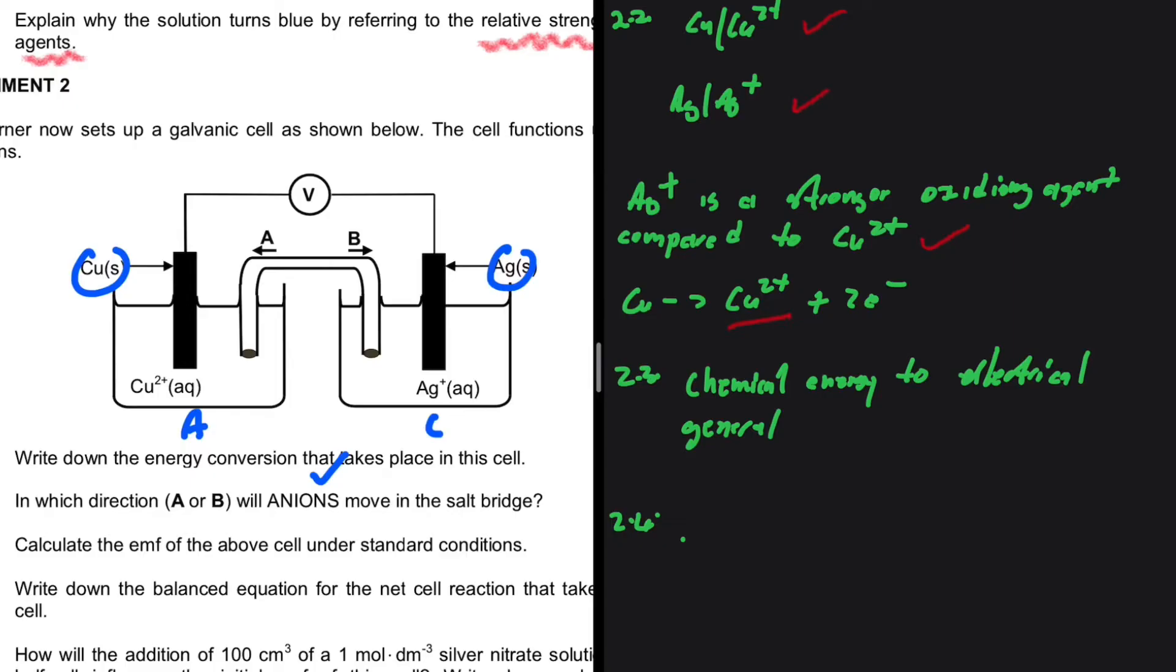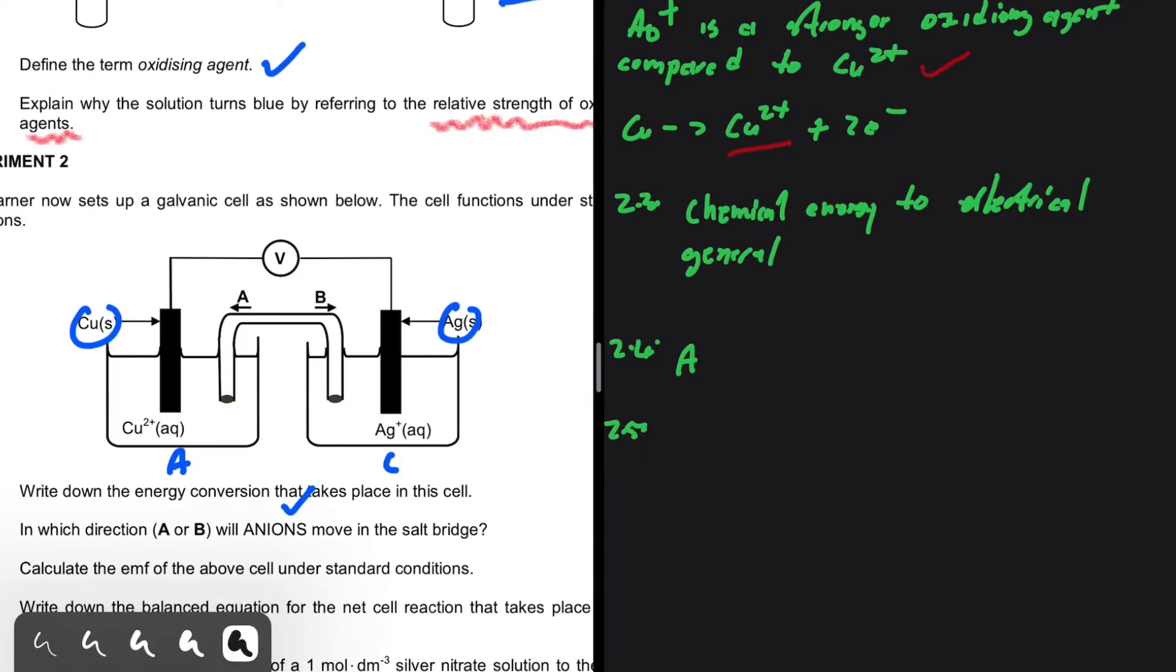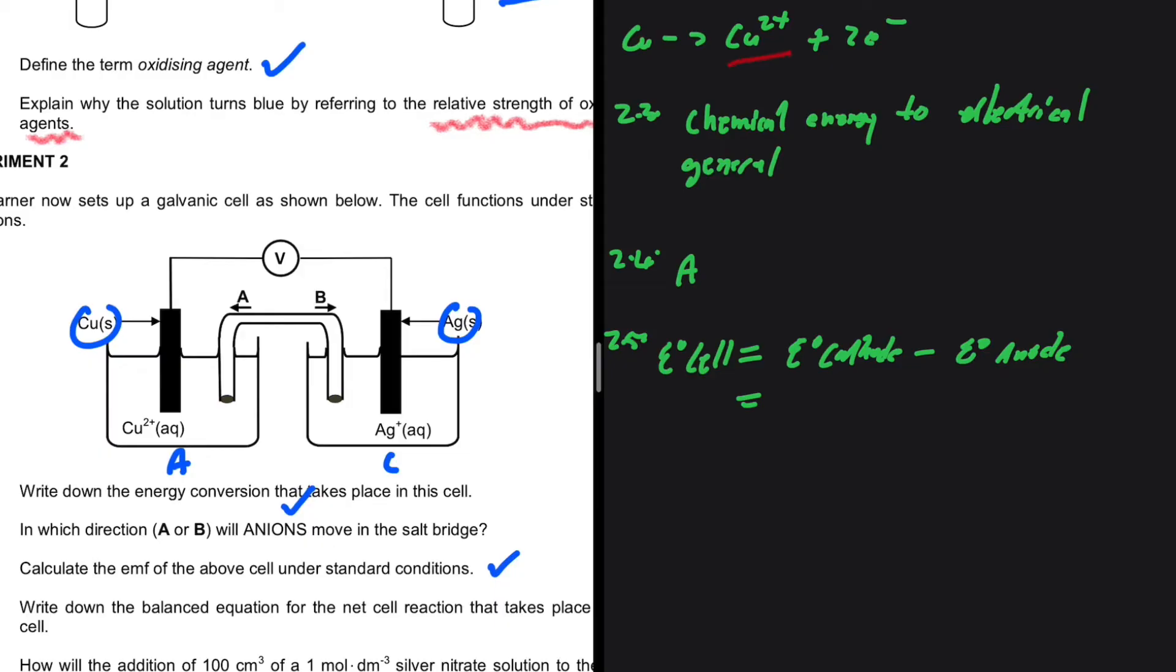2.5: calculate the EMF of the above cell under standard conditions. The EMF of the cell under standard conditions is the reduction potential at the cathode minus the reduction potential at the anode. This equals, at the cathode we have silver—